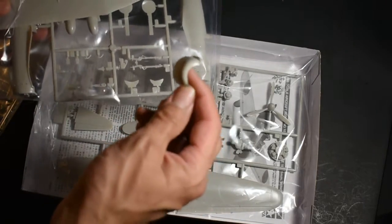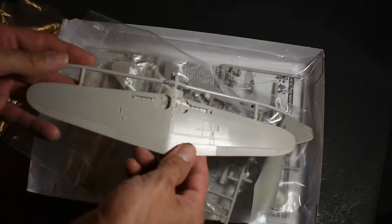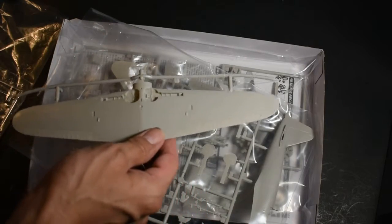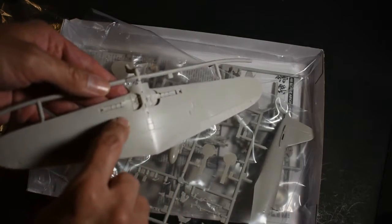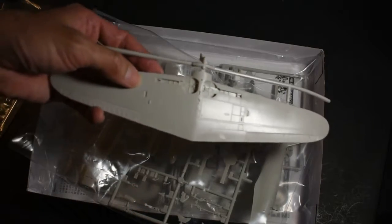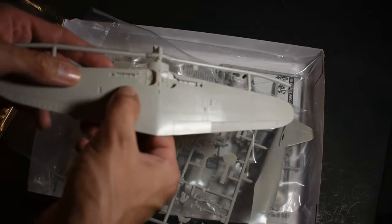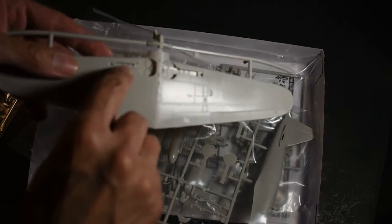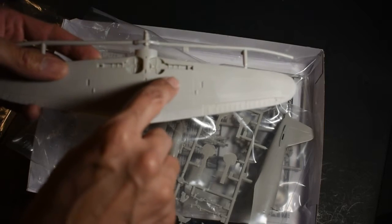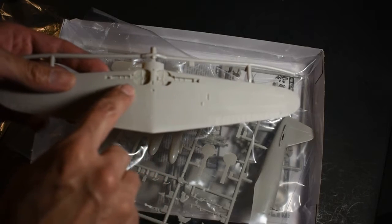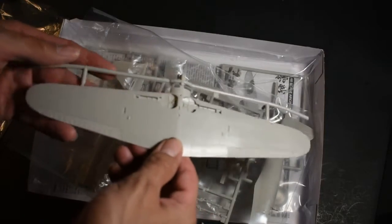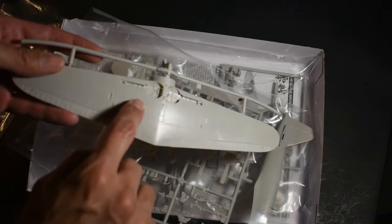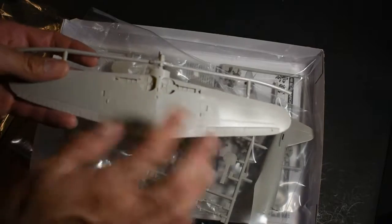This is the front engine cover area. Detail is pretty good on the Tamiya kit here. Nice recessed panel lines, a little bit of some riveting holes here. One thing about the riveting holes on this kit is that they are very fine. If you put too much primer in there, surface primer, you may have some problems with covering those up.